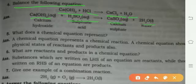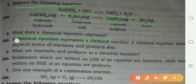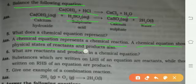So here we have to balance. What does a chemical equation represent? A chemical equation represents a chemical reaction. A chemical equation shows the physical state of reactants and products also.